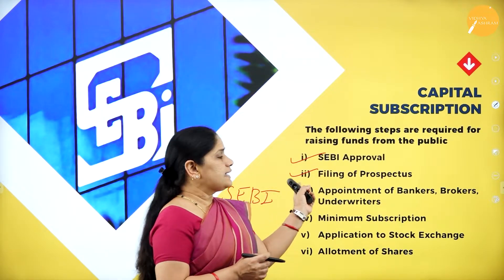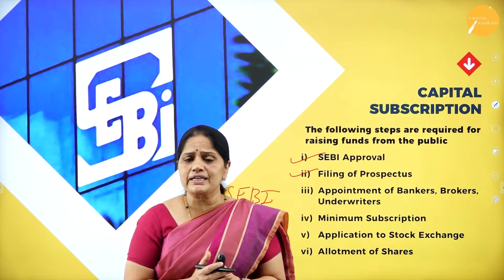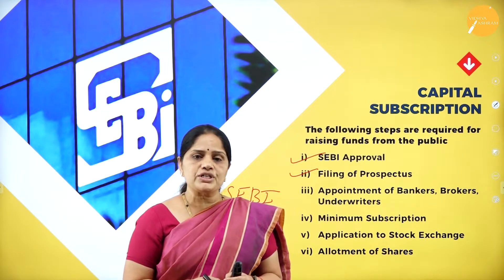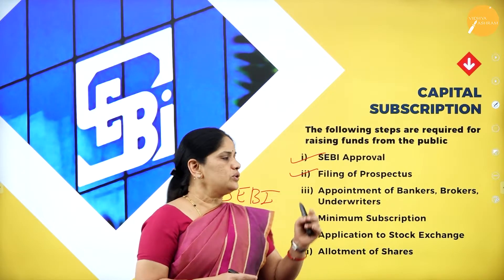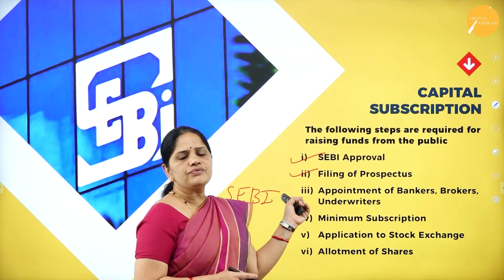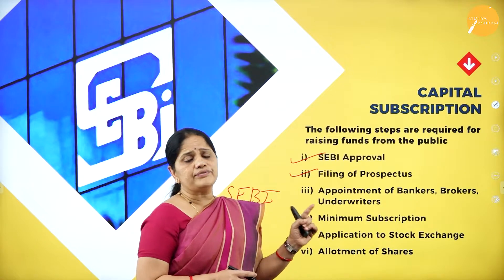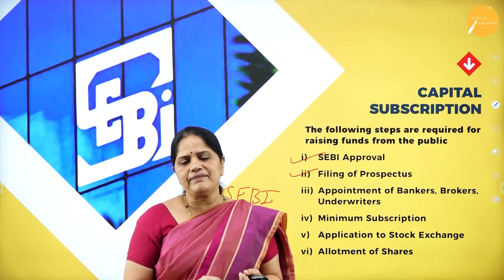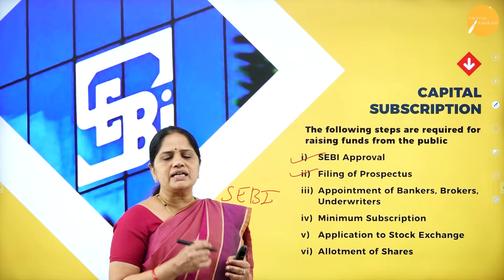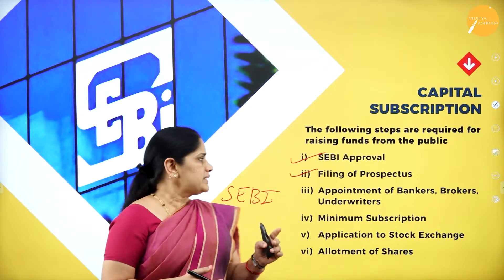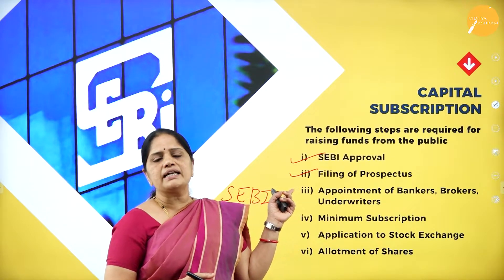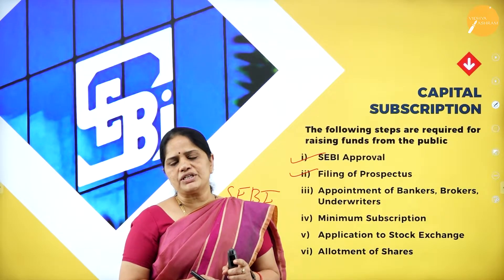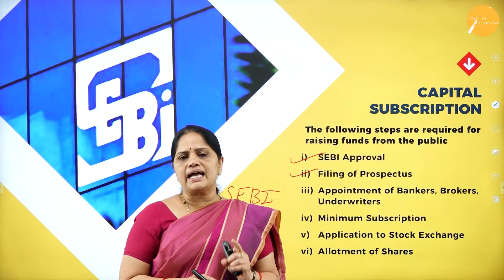The next step is filing of prospectus. A prospectus must be issued by any public company before it goes for public issue, containing all information about the company. Whenever a company goes for public issue, it has to file the prospectus with the registrar of companies, or it can file a statement in lieu of the prospectus. For a public company, it is mandatory to file the prospectus. For a private company, it is not mandatory — they can have a statement in lieu of prospectus. The prospectus gives information about the company, its owners, directors, and all its activities.